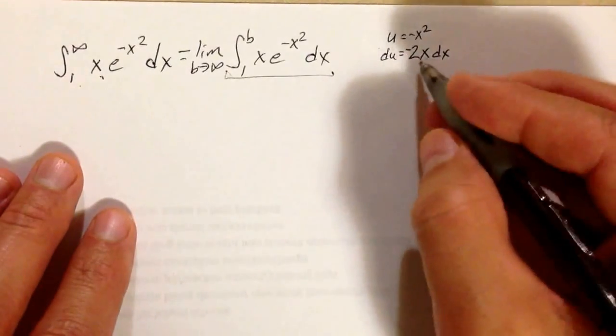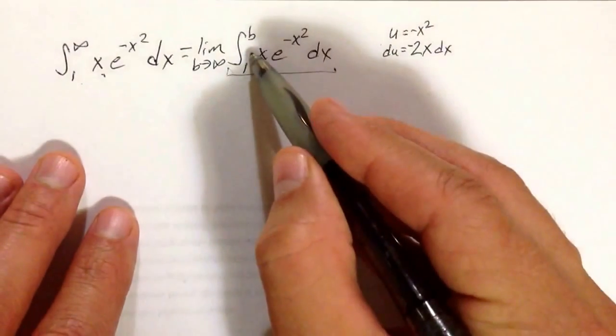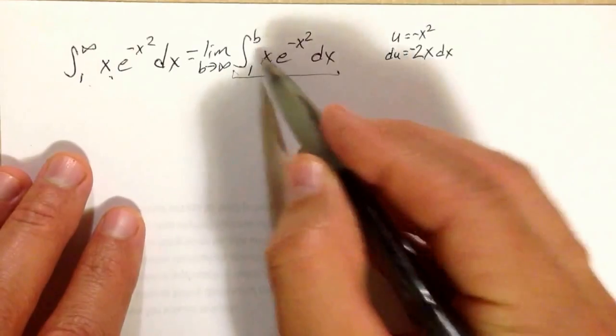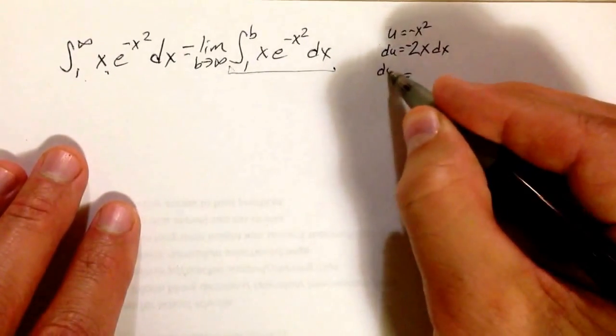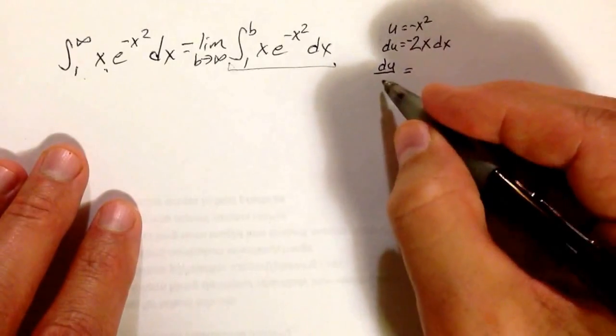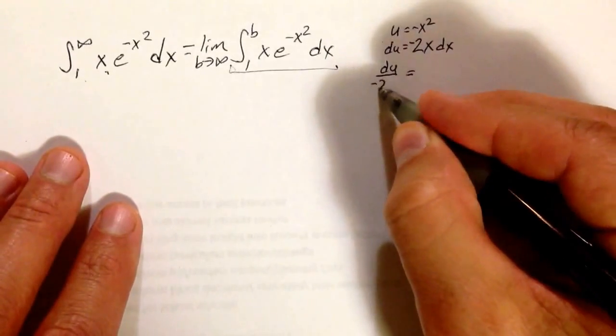I suppose there's two schools of thought here. I can put my 2 and my 1 half in there, or I'll just write this as du over negative 2 equals x dx.